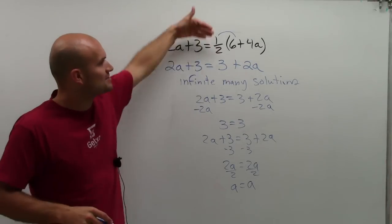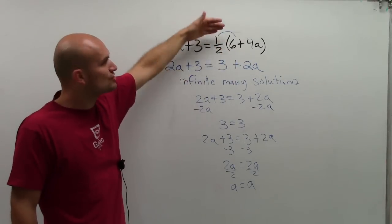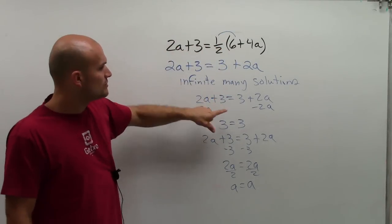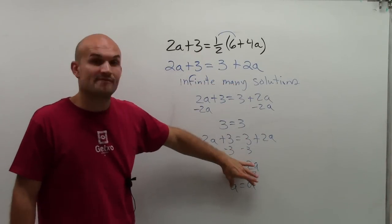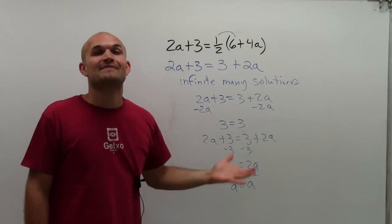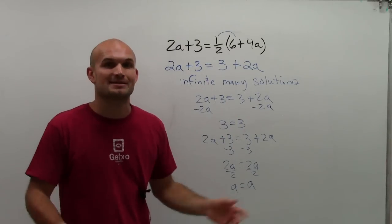So here's the problem. Just make sure you simplify on both sides. Try to isolate the variable. But if you notice, once you get a solution with a number equal to the number or a variable equal to the variable, you're going to have infinite many solutions. Thanks.